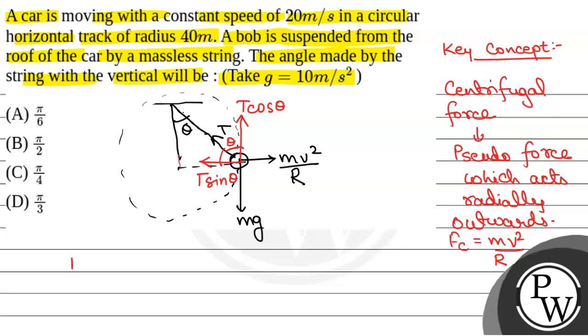Balancing forces in vertical direction and horizontal direction both, we will have T cos theta equal to mg, and T sin theta is equal to mv squared by r.